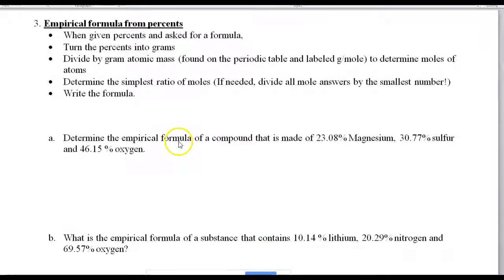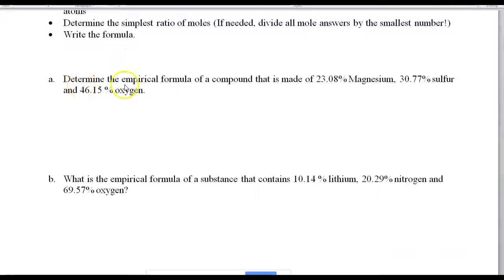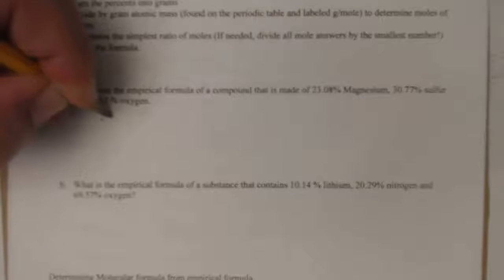So, let me show you how we do the first one. Let's determine the empirical formula, so our goal is a formula. If it's 23.08% magnesium, 30.77% sulfur, and 46.5% oxygen. So, now we have three elements. Let's see how we're going to work this one out. So, the first thing I'll do is I'll take 23.08 grams of magnesium, 30.77 grams of sulfur, and 46.515 grams of oxygen.